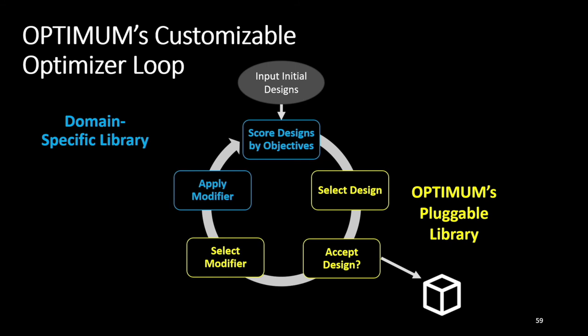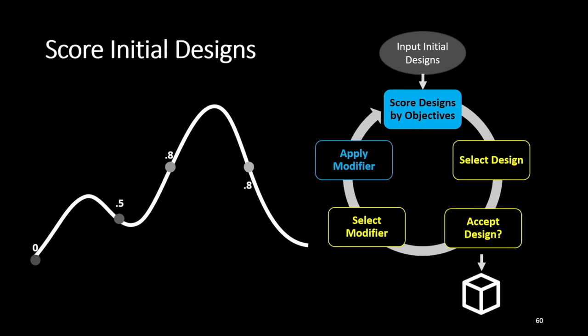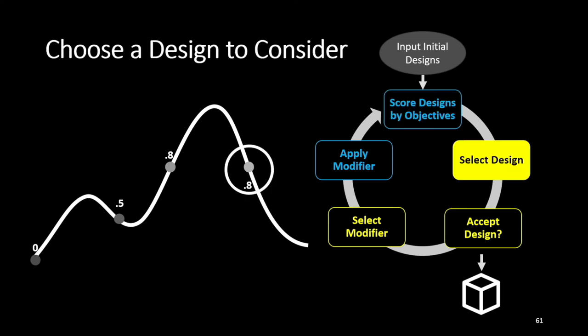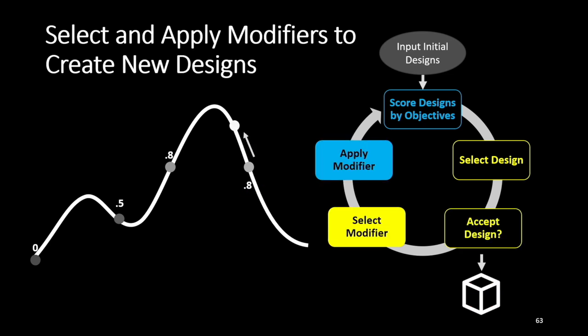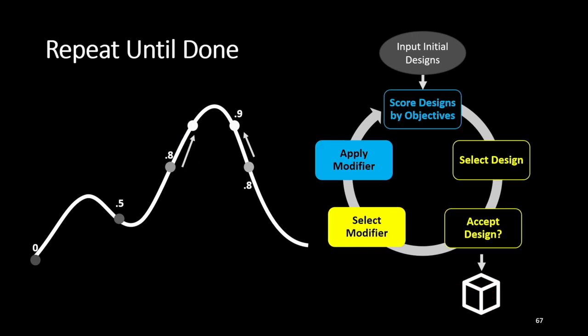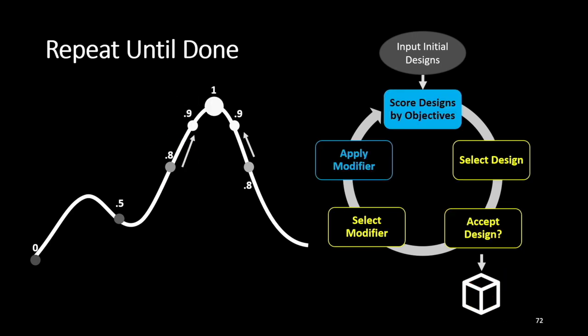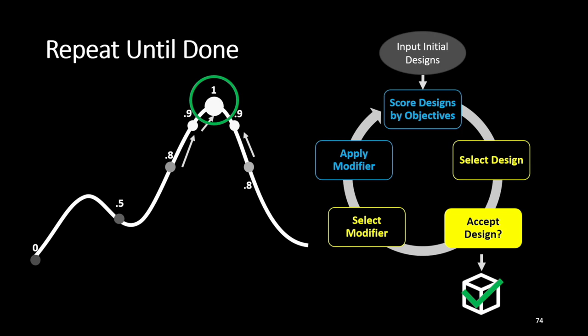Once they've selected this and provided a heuristic map, Optimum runs through a simple optimization loop. It starts by giving you a set of input designs and then giving them a score based off of the objective function. It then selects the design using the design selector, considers whether or not it wants to accept that design, and then selects a new modifier and applies it to create a new design. You cycle around a few thousand iterations until you find the design the person wants or it meets some acceptance criteria.